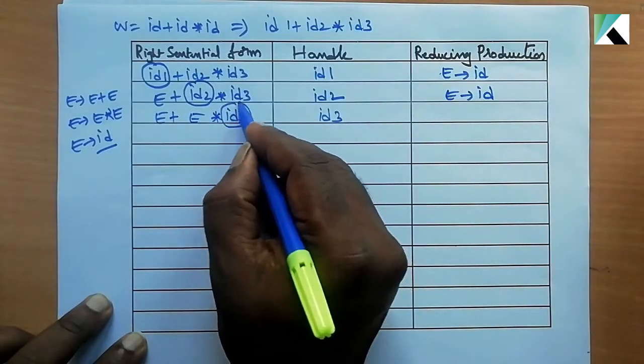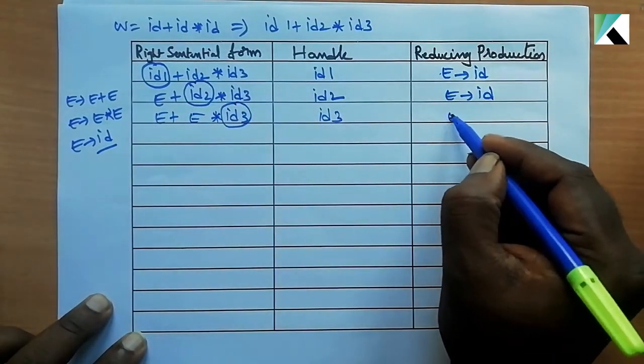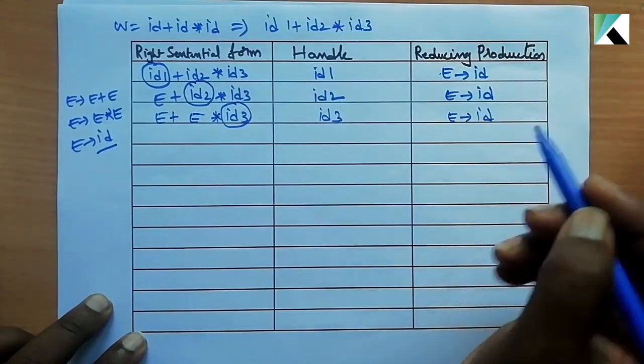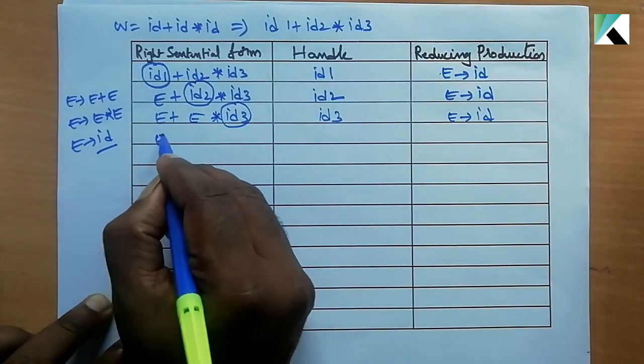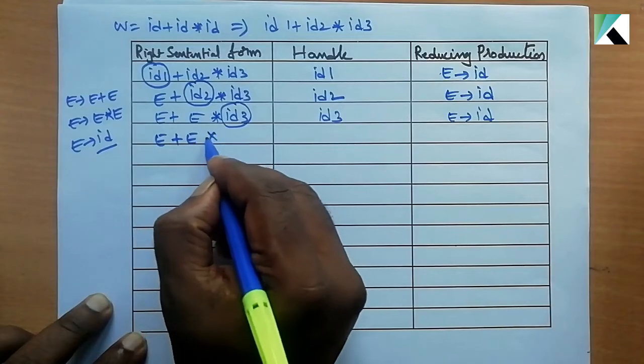Considering this one as a handle, again I am reducing with the same production, E derives ID, giving us E plus E star E.